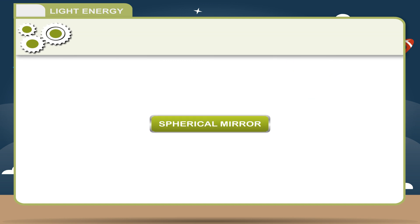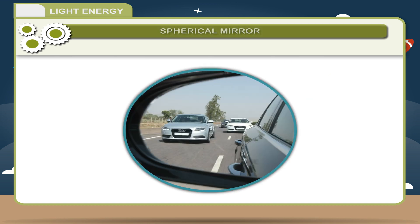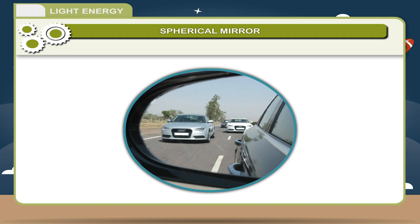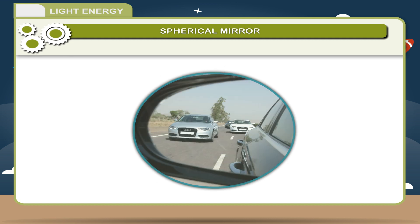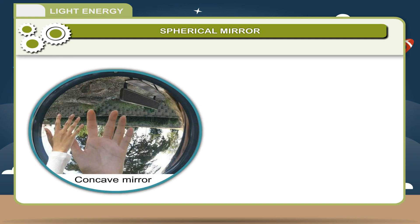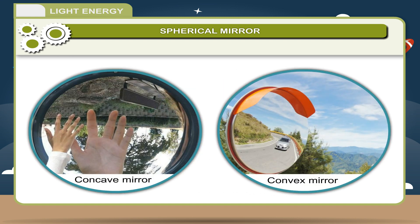Spherical Mirror: A mirror with a spherical surface is called a spherical mirror. Spherical mirrors are of two types: concave mirror and convex mirror.